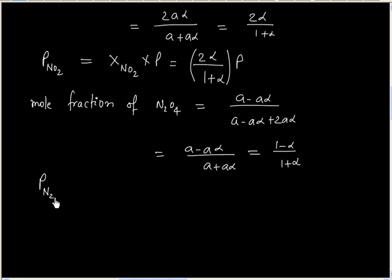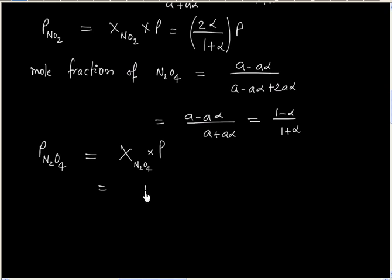We can calculate partial pressure due to N2O4. Mole fraction of N2O4 times total pressure. Mole fraction is 1 minus alpha divided by 1 plus alpha.